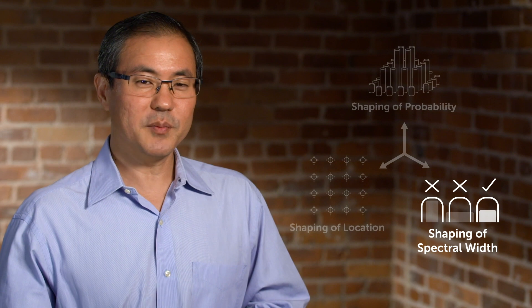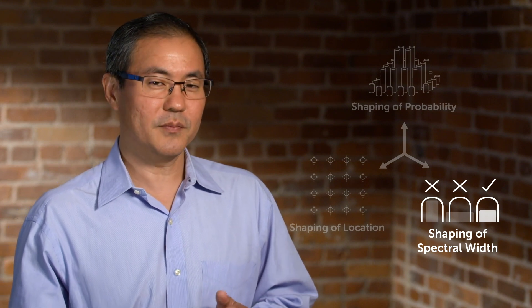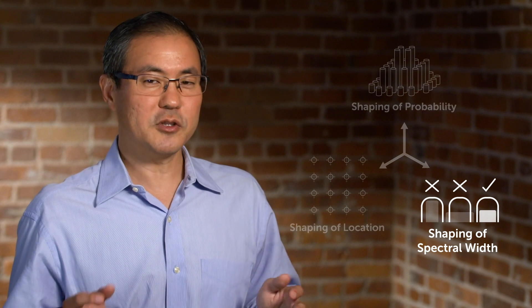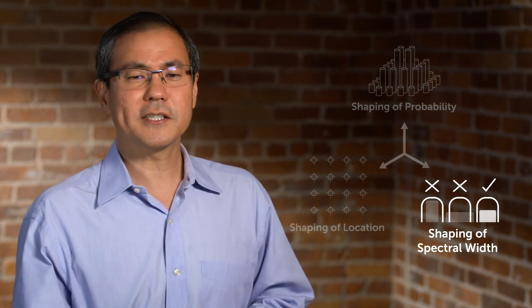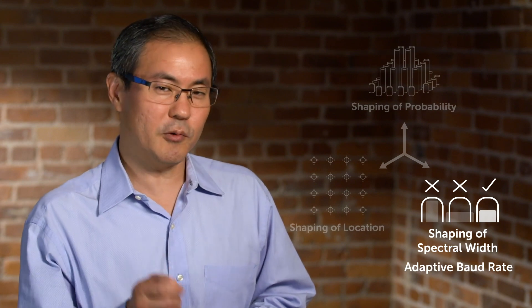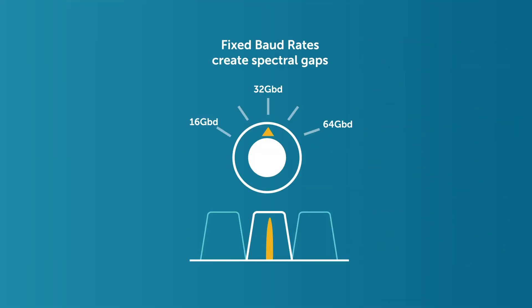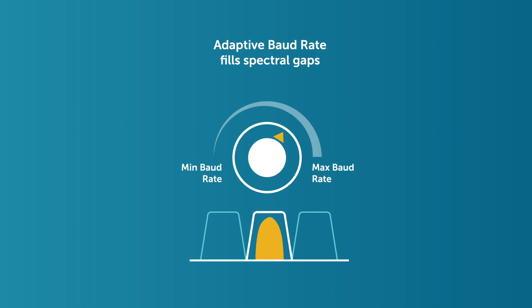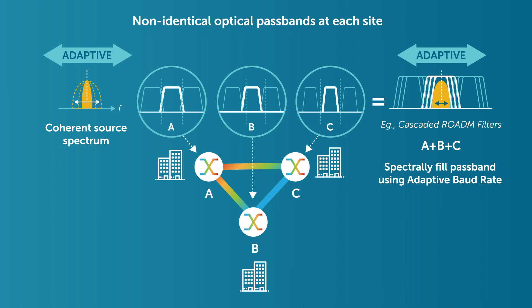The third element of 3D shaping is the ability to shape the transmission spectrum, which enables unused spectral gaps to be converted into usable bandwidth. This is accomplished by a feature called adaptive baud rate. Previous generations of DSPs have fixed or quantized baud rate choices, which can create spectral gaps in a channel. Using adaptive baud rate, Pico-powered modules can adjust the transmission spectrum to better fit into the aggregate available passband of the channel, useful in metro or long-haul networks with multiple ROADM network elements. By shaping the spectral width using adaptive baud rate, one can turn spectral gaps into usable bandwidth.